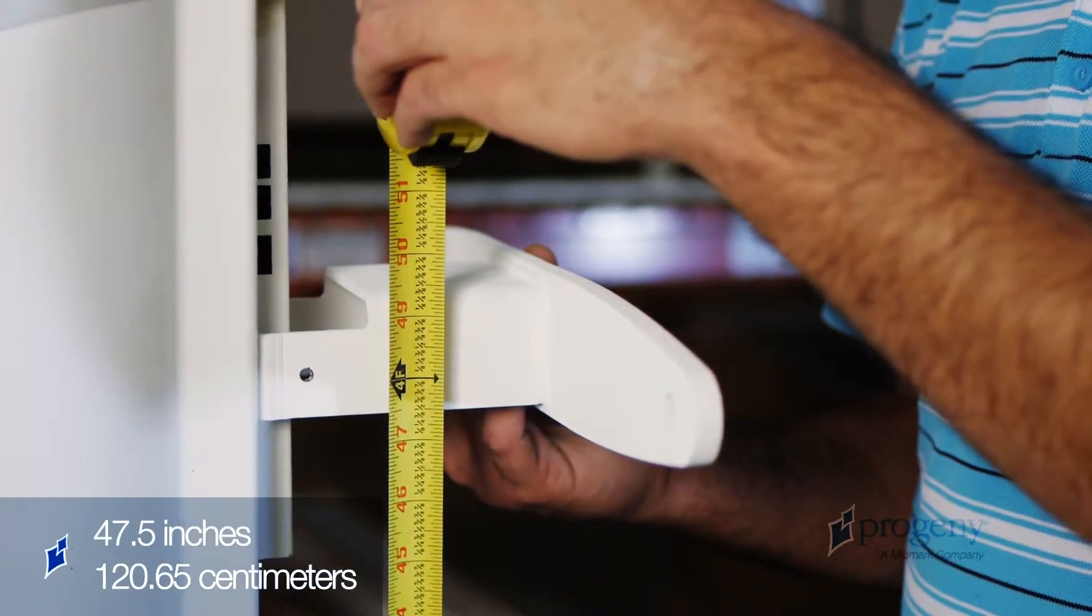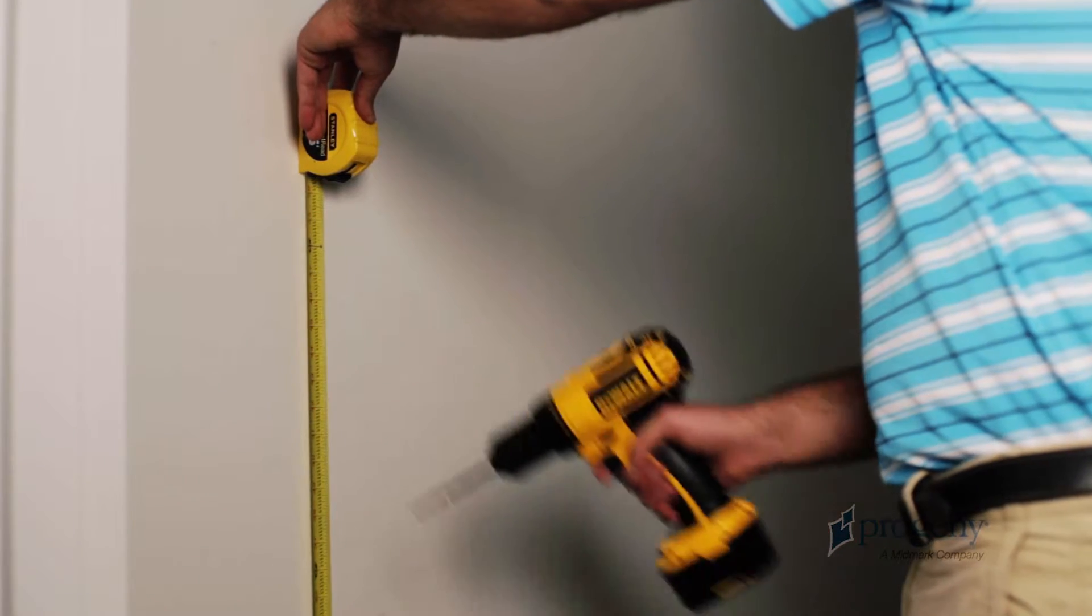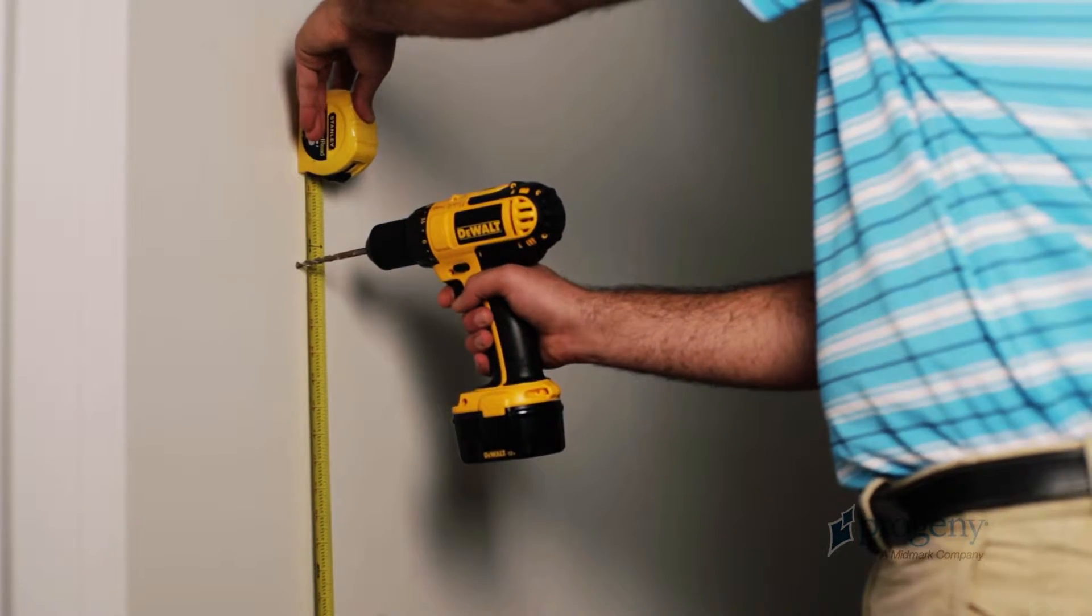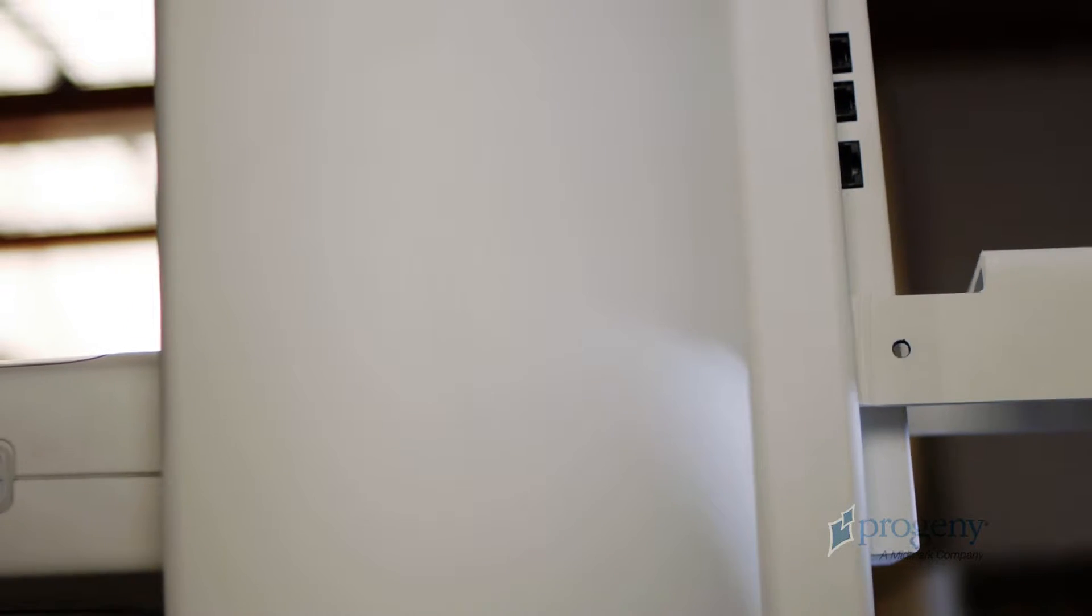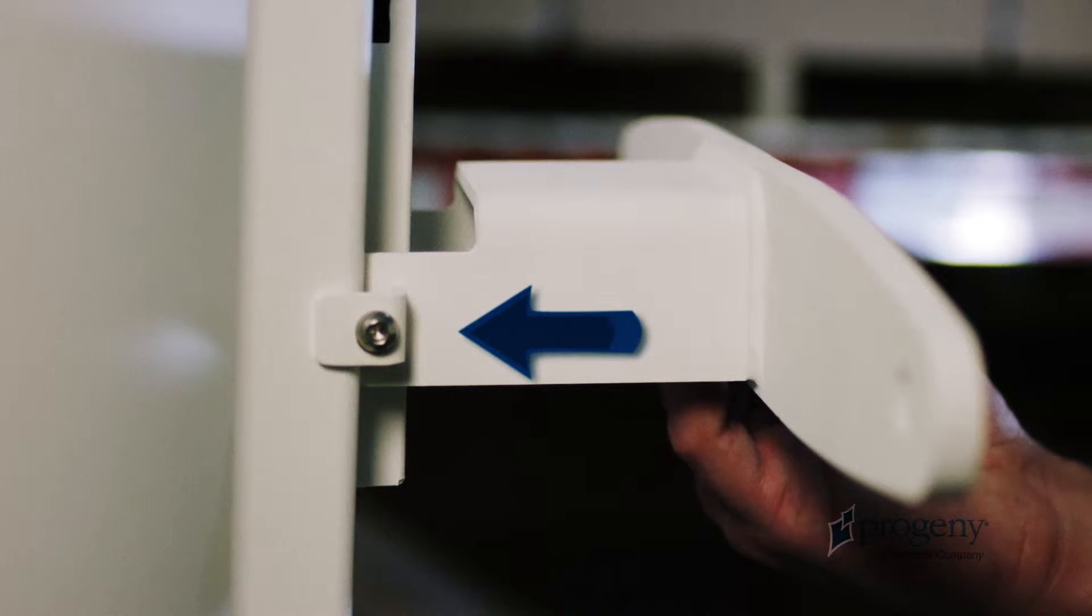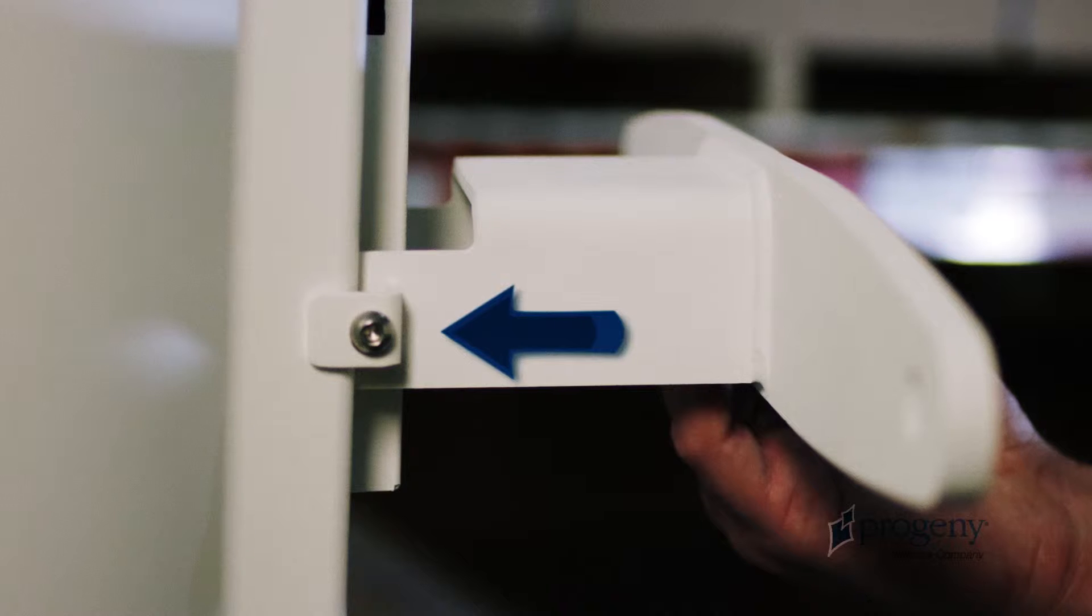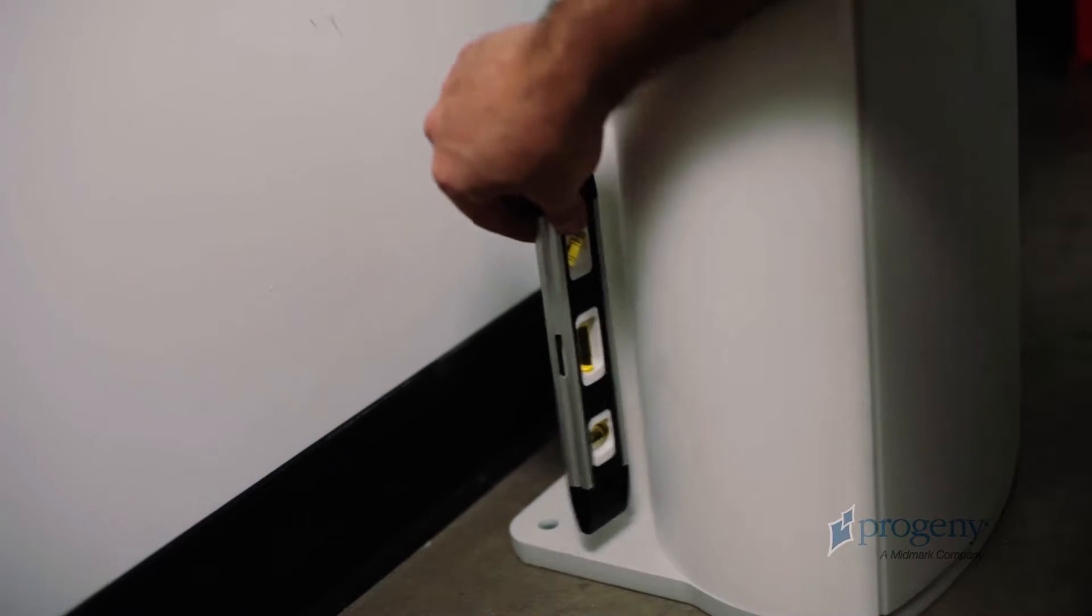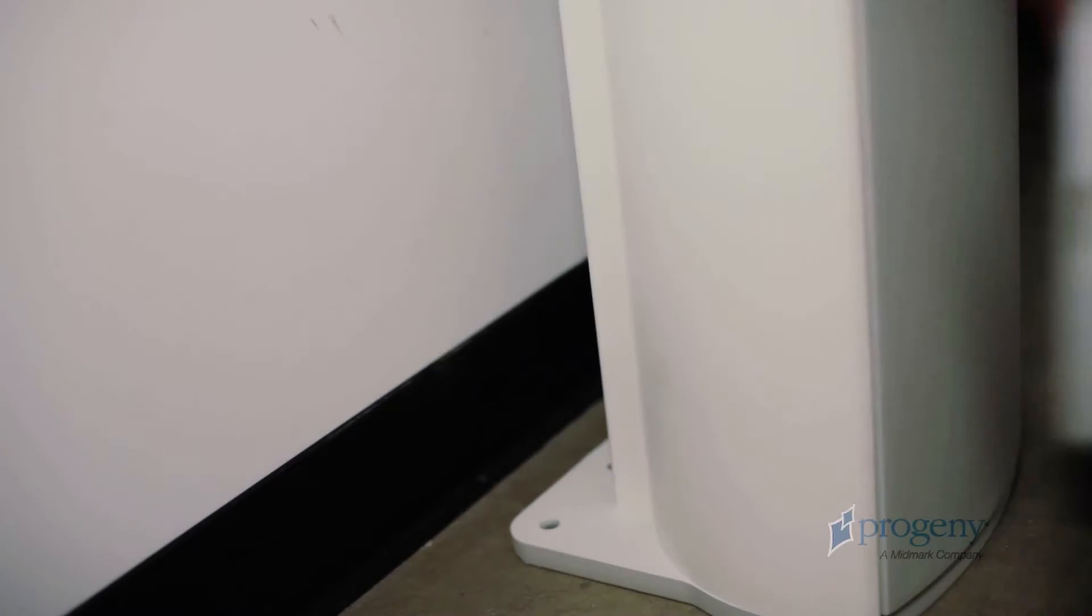The main column will be attached to the wall mount 47 ½ inches from the floor. After mounting the wall mount bracket, snap the column in place. You must attach the clamps, but do not completely tighten until checking to make sure that the main column is level.